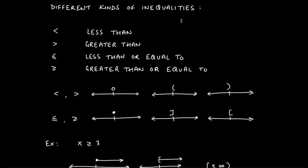The different types of inequalities we're going to see are: less than, greater than, less than or equal to - where you have a little half equal sign fused to the bottom - and if it's facing the other way, greater than or equal to.